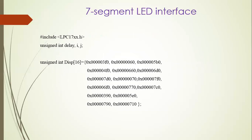Now we know the hardware interfacing diagram and that we are using common cathode, so logic 1 enables the LEDs. After doing the hardware, we write the C program. The program starts with the header file, followed by variable declarations: delay, i, and j declared as unsigned int. Since I have to display 16 characters from 0 to F, I take an array named 'disp' of 16 unsigned integer elements, and load all hexadecimal values from 0 to F into it.